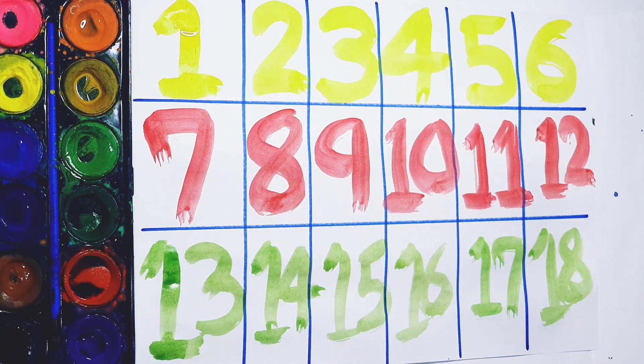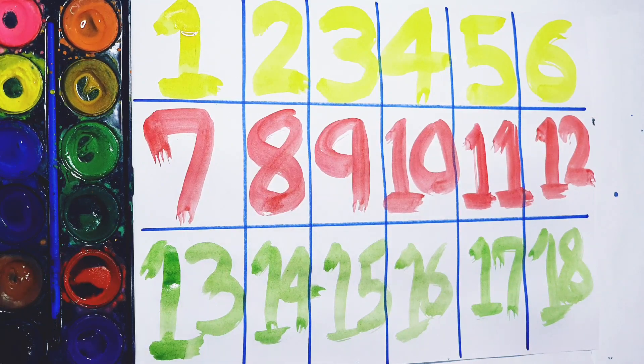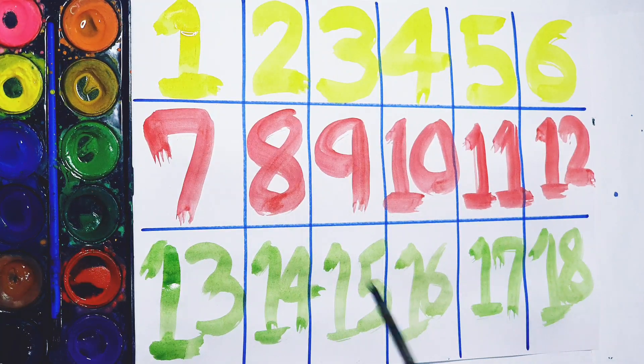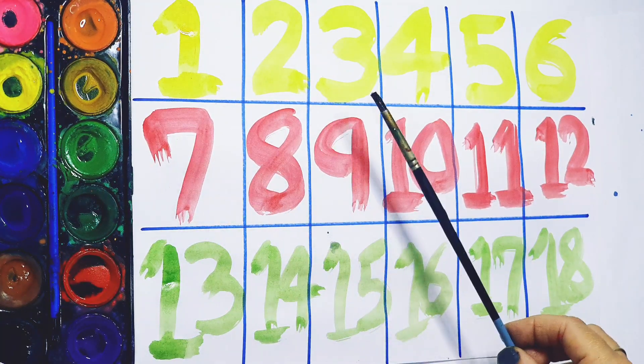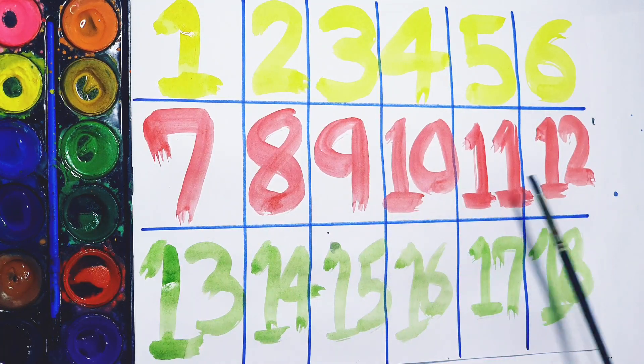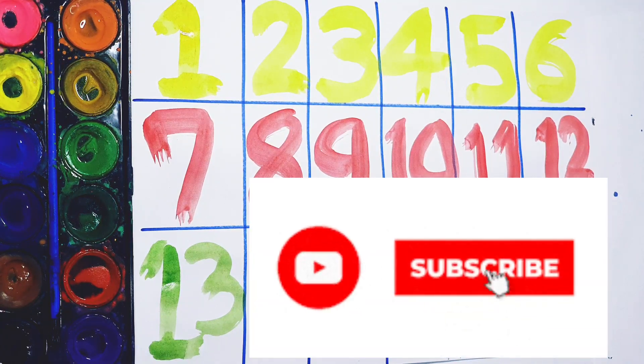So kids, what we learned today: we learned yellow color, red color, light green color, and 1, 2, 3, 4, 5, 6, 7, 8, 9, 10, 11, 12, 13, 14, 15, 16, 17, 18. So kids, hope you liked my video.